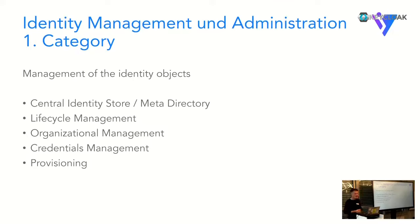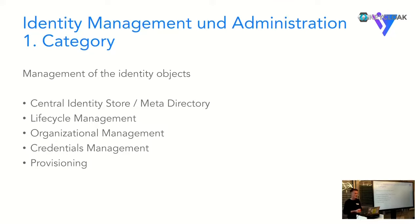The first category is about identity management - the administration of identities. Important aspects here include having a central identity store. You need to have one database which uniquely identifies your identities and knows about their characteristics, knows how you can identify them - this is the so-called single source of truth, the one database which defines your identities.